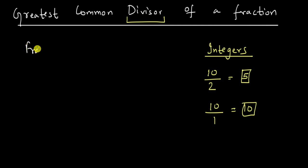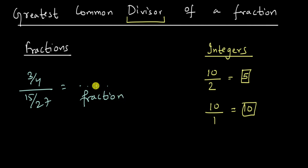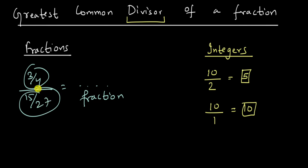What about fractions? How can we define divisors of a fraction? The problem here is that if we divide any fraction, let's say 3/4, with any other fraction, let's say 15/27, we know that what we will get is also going to be a fraction. So if all of these are fractions, there is nothing special about these divisors.